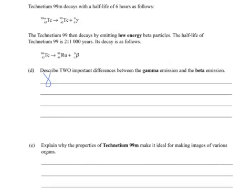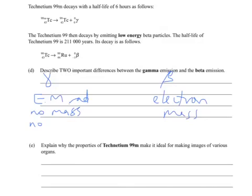Gamma is electromagnetic radiation. Beta is an electron, high-speed electron, so that has mass and the gamma radiation has no mass. No charge on the gamma, but there is a negative one charge on the beta radiation.